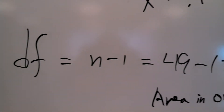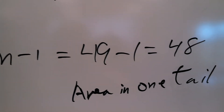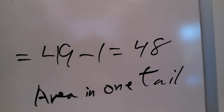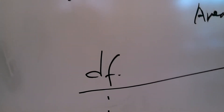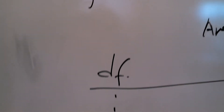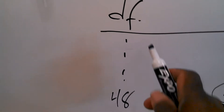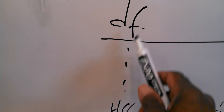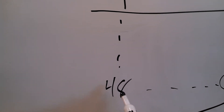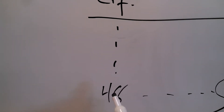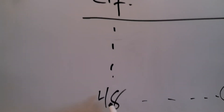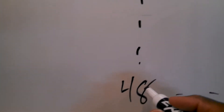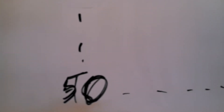First, we get the degrees of freedom: N minus 1 equals 48. Once we have the degrees of freedom, we look up T sub alpha over 2 in the T distribution table. Since 48 is not in the table, we use the closest value, which is 50.